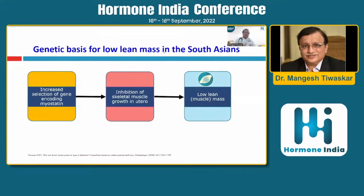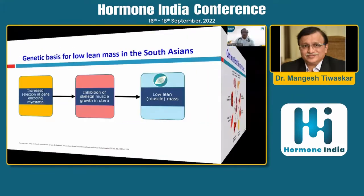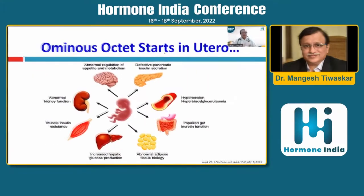In the Southeast Asian population, there is increased encoding of a gene related to myostatin, which is responsible for skeletal muscle growth. The inhibition of myostatin encoding ultimately leads to low lean muscle mass. This was ominously demonstrated by Dr. Chittaranjan Yajnik in his 'ominous octet' paper, first discussed at an ADA conference during his Banting Lecture in 2009.